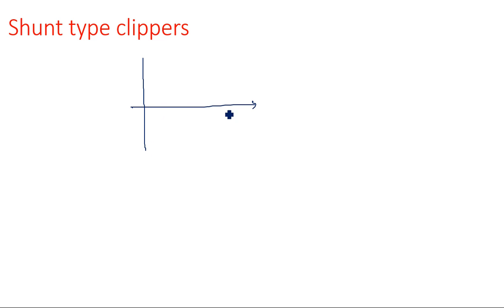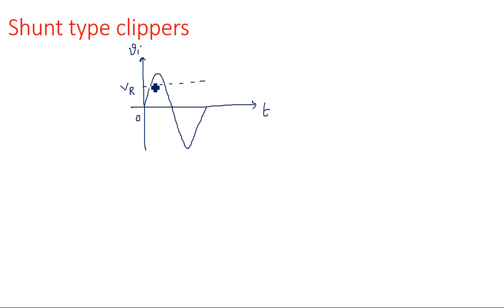Taking a pure sinusoidal signal as input for this shunt clipper — this is the input waveform with time on the x-axis and Vi on the y-axis. The input voltage reference VR is the reference voltage for this clipper. There are two possibilities: clipping above the reference level, where the upper part is eliminated, and clipping below the reference level, where the remaining entire signal is clipped.